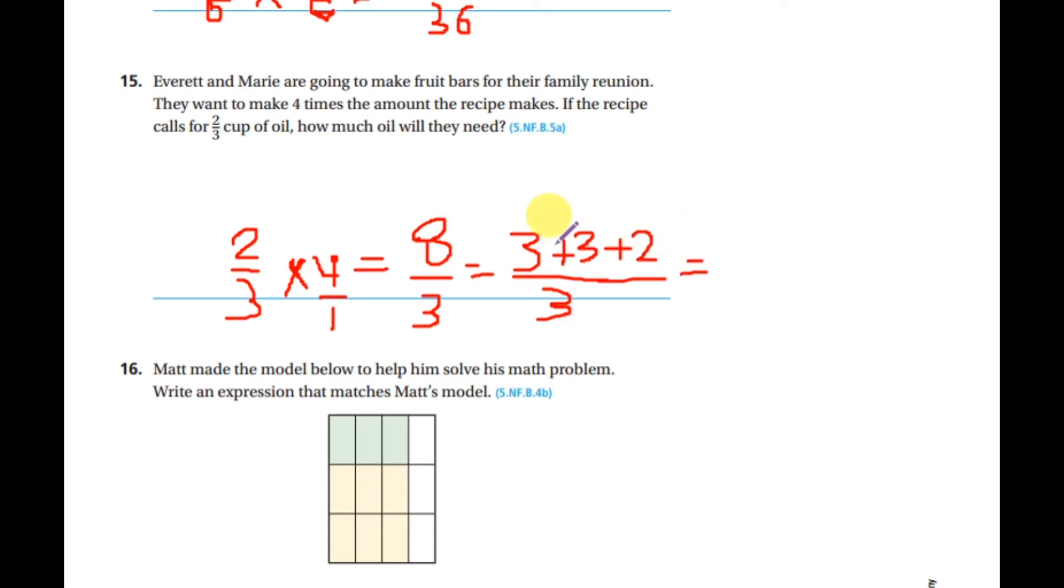Now how many whole numbers do I have here? This is one and this is one. So I have two whole numbers, and finally the fraction will be a proper fraction, two over three.